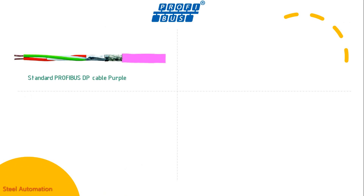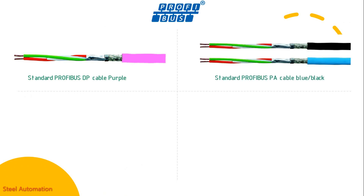Some components are used in relation to Profibus communication. Profibus DP and Profibus PA cables have the same construction but differ in color for identification. The standard outer sheath color for Profibus DP cable is purple, and for Profibus PA cable it is black or blue. It is a special cable having one pair of copper conductors with an aluminum tape and tinned copper drain wire over the inner sheath.